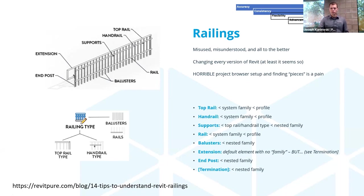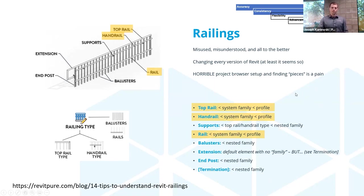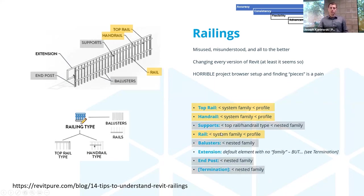Here I've listed the different components and how they are placed into the railing, showing how everything is nested. The only element in the list that isn't a nested family is the extension — that's a parameter within the nested family within the rails. Within each rail, three of them specifically come from a profile family that you load into a system family, which you then load into the railing system family.